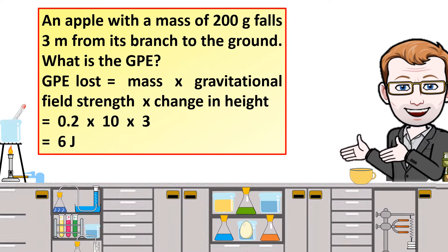Looking at an example: an apple with a mass of 200 grams falls 3 meters from its branch to the ground. What is the GPE? GPE loss equals mass times gravitational field strength times change in height, so that would be 0.2 times 10 times 3, which equals 6 joules.